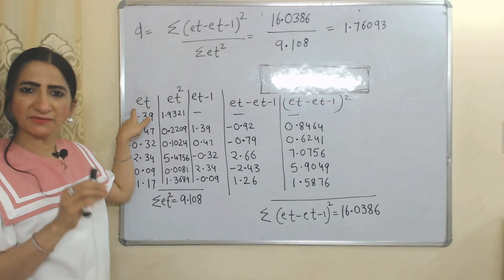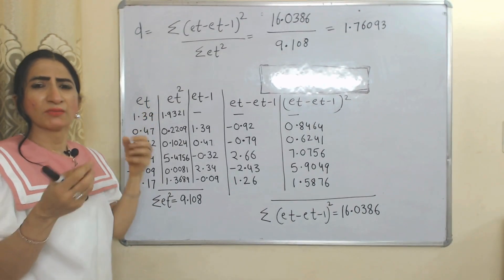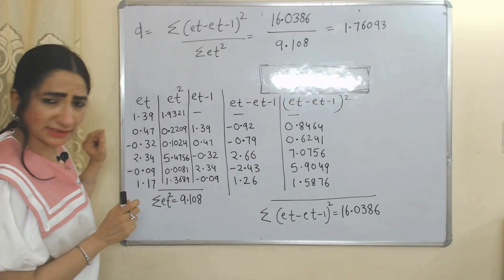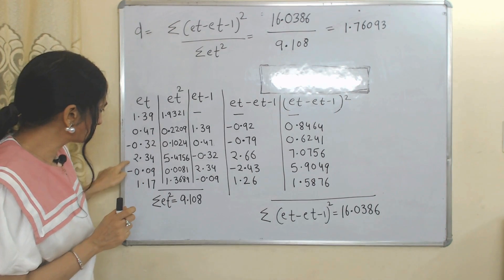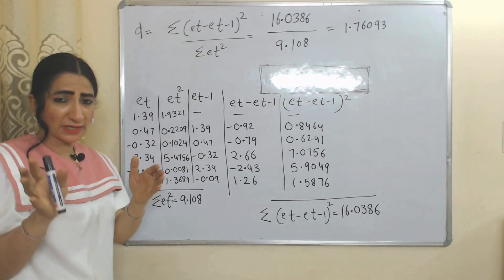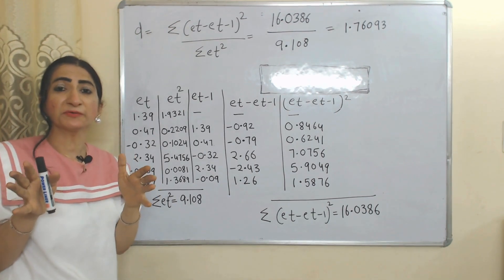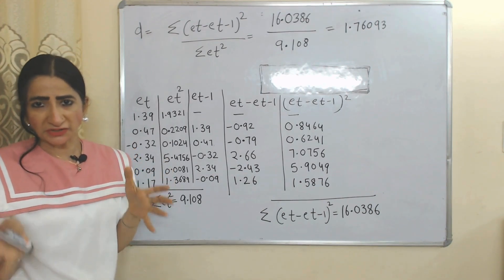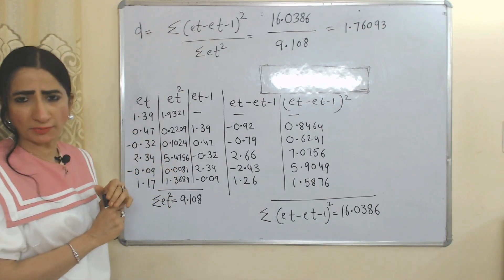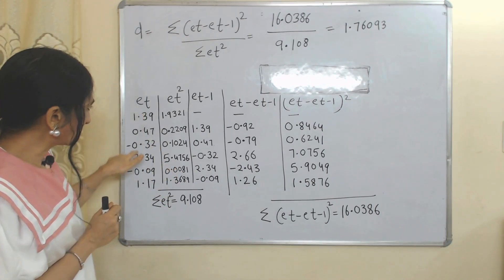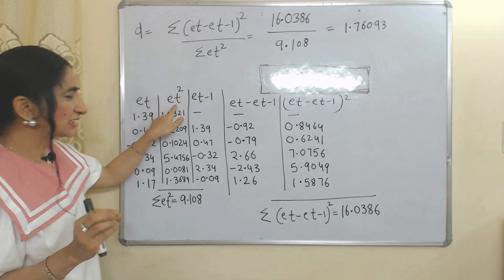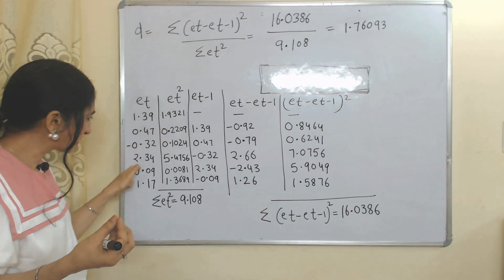Now we will see how to calculate d if e_t is given in the question. Here we have a total of six observations. The Durbin-Watson test is more relevant when we have a minimum of 15 observations, but here, for the sake of simplicity, we are taking only six. The first column has the values of e_t, which are given. Now we will calculate e_t squared.